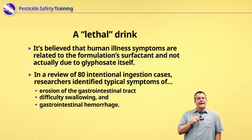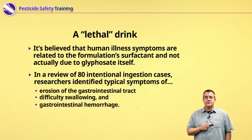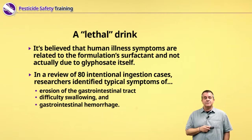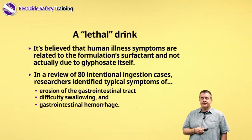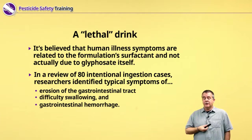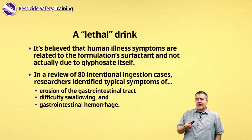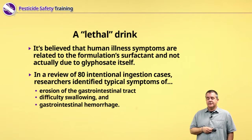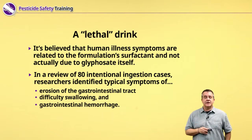In a review of over 80 intentional ingestion cases where people were purposefully ingesting glyphosate-based herbicides, you get the same kinds of symptoms: erosion of the gastrointestinal tract — the gut — difficulty swallowing (which makes sense since the GI tract includes your esophagus, the tube food goes down), and gastrointestinal hemorrhage, or bleeding in the gastrointestinal tract. Those are the kinds of symptoms that develop if you purposefully ingest more than a pint of a glyphosate-based product.